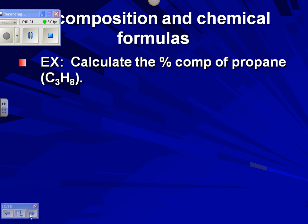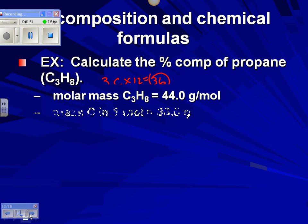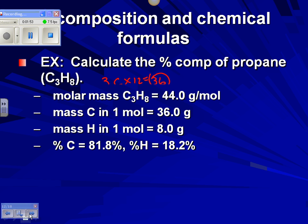Another way to look at percent composition is when we know what the compound is but not specific amounts. Here we have propane, C3H8. We do a formula mass: carbon is 12, so that's 36; we have eight hydrogens at mass of one, so that's 8. All told, one mole of propane weighs 44 grams. Then we simply say 36 divided by 44 to get the percent composition of carbon.